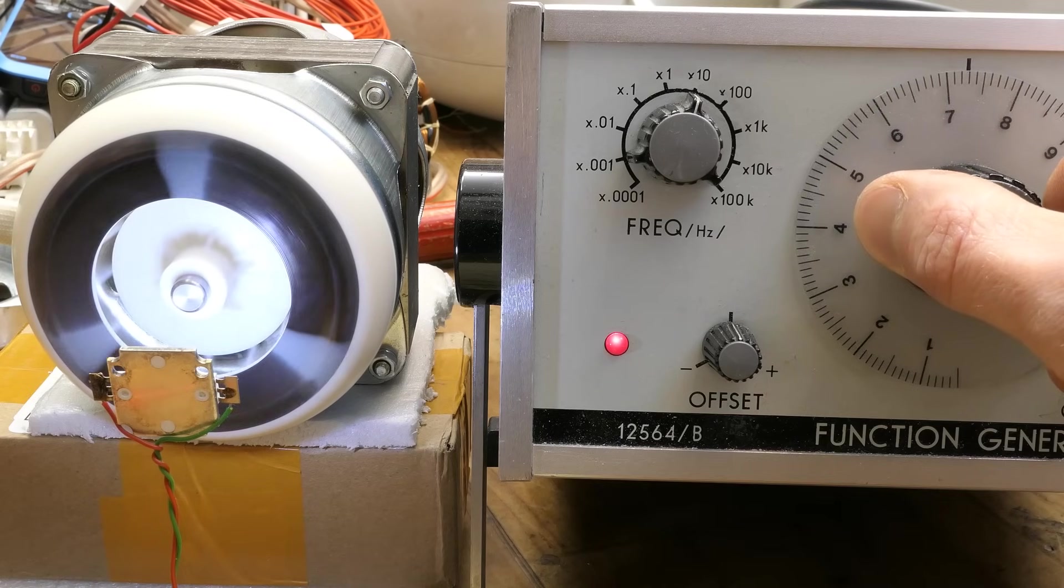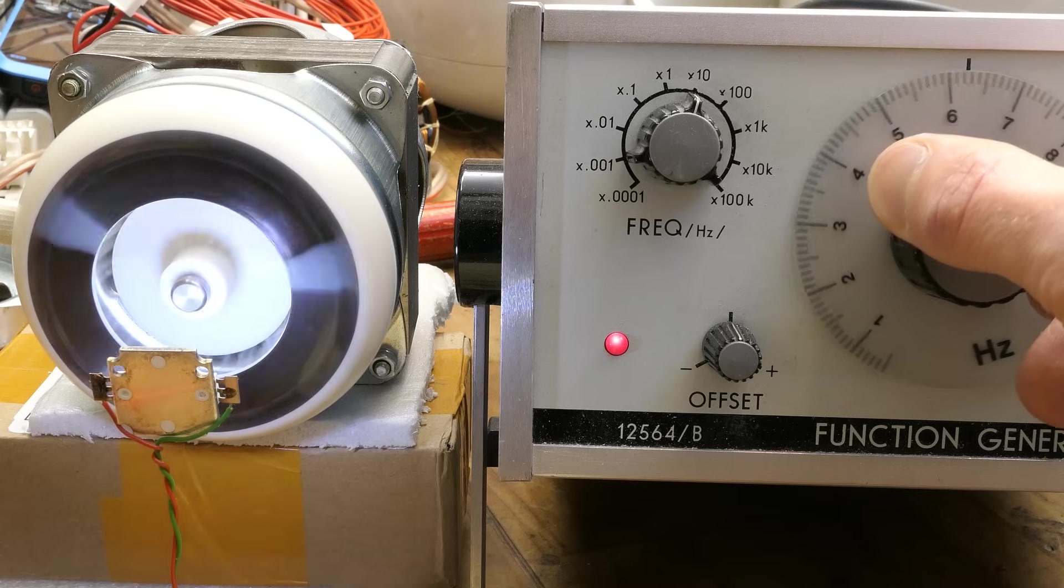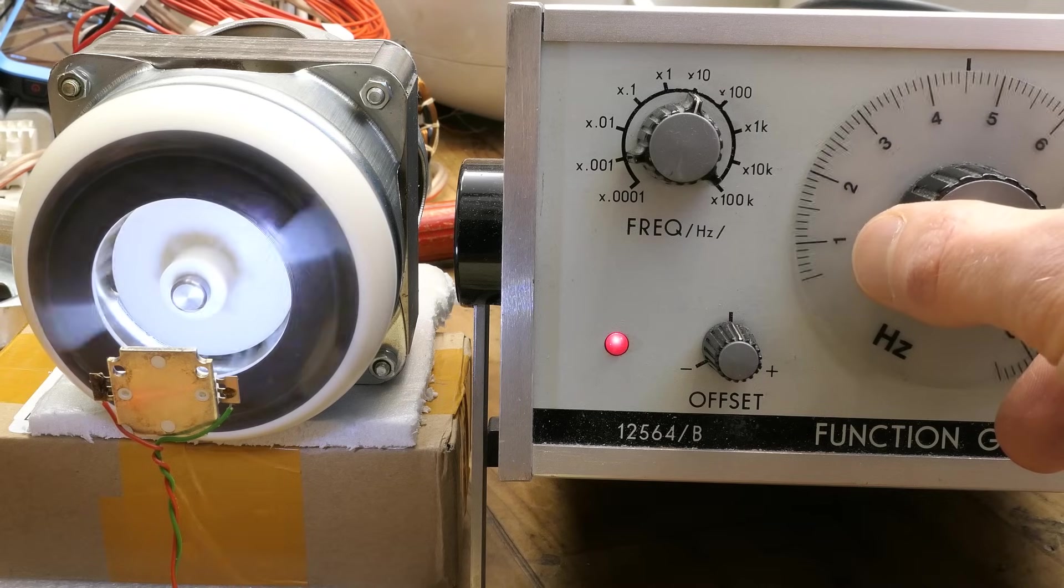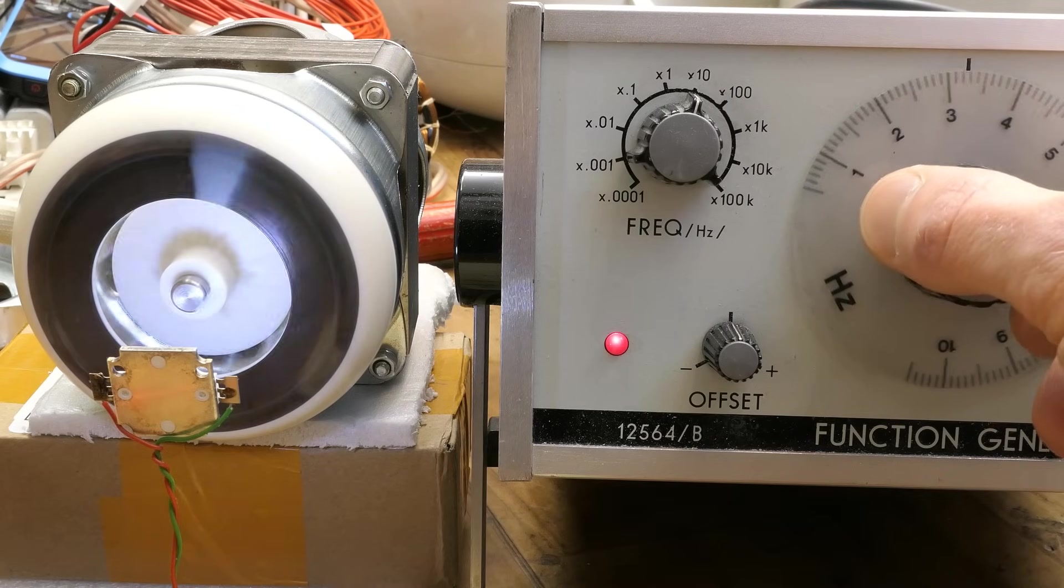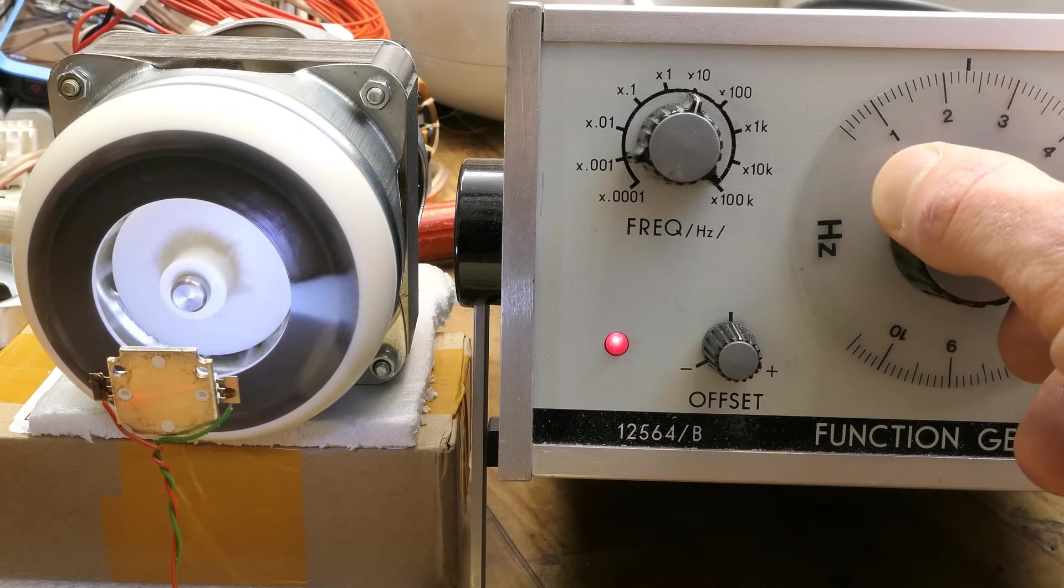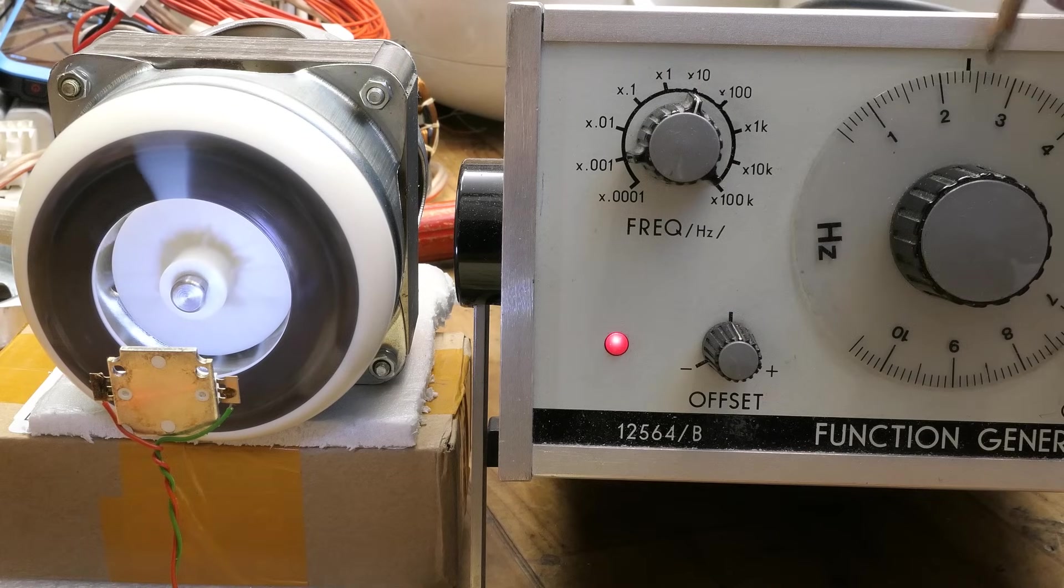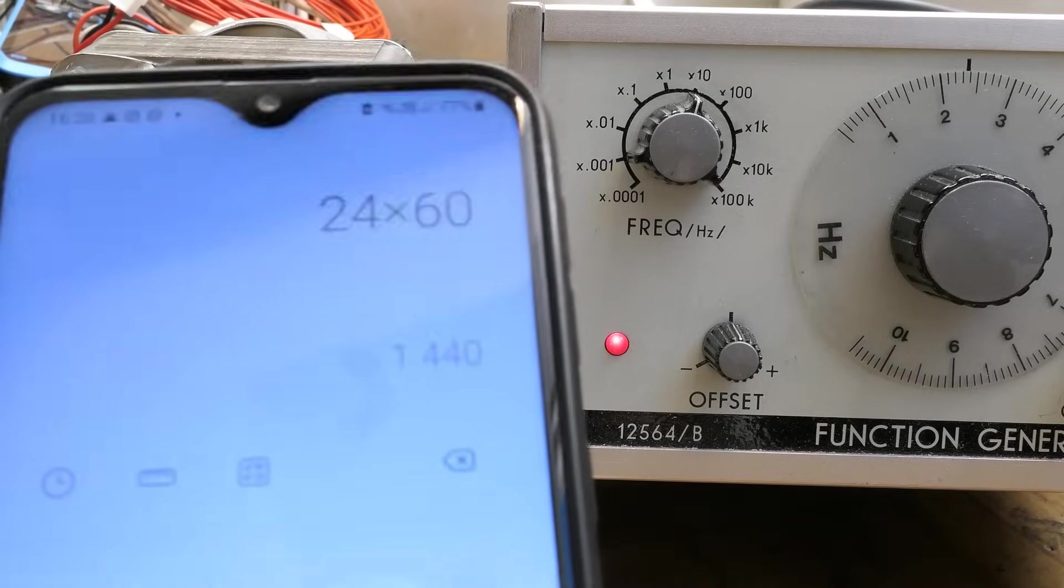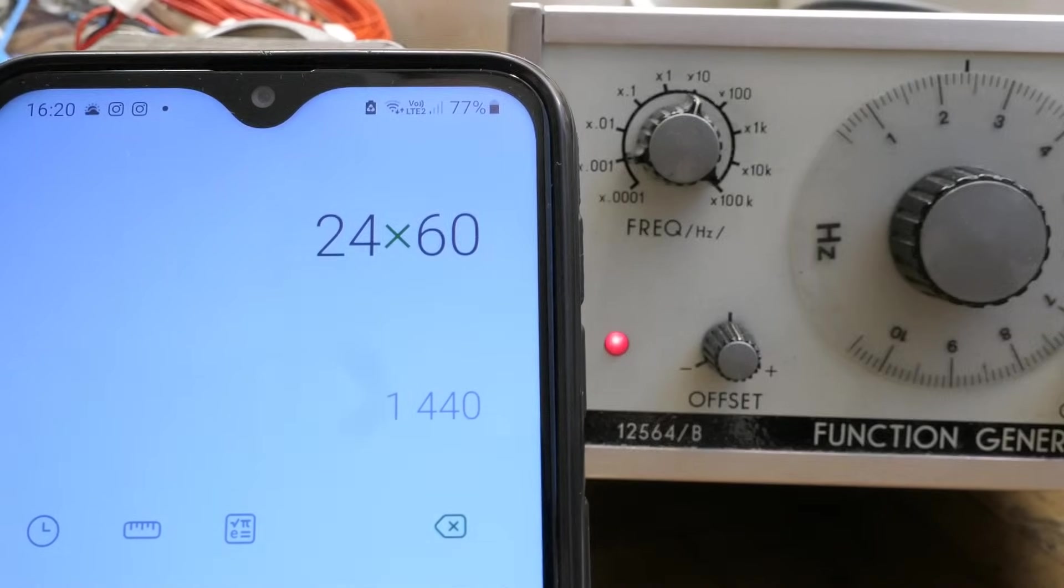Three notches. Two notches. Three notches. And finally there should be just one. And there it is. At about 24 hertz. Times 60 is 1440 rpm.